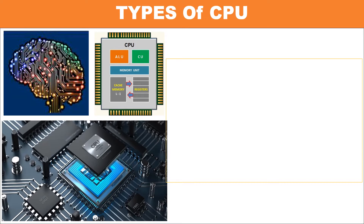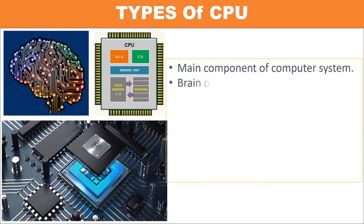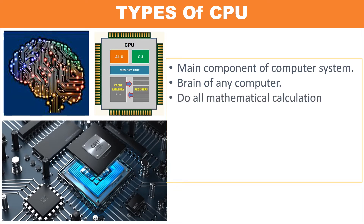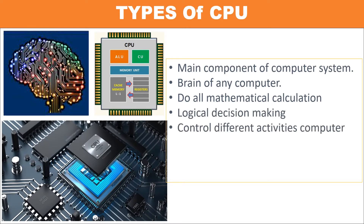The CPU, or central processing unit, is the main component of a computer system — it is the brain of any computer system. The CPU is mainly responsible for doing all mathematical calculations, logical decision making, and to control the different activities of a computer system. The CPU is a vital element that manages all the calculations and commands which are transferred to other components of the computer.